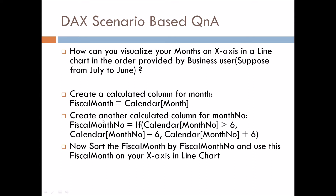Then we create another calculated column for the month number: 'Physical Month Number' equals if 'Calendar Month Number' is greater than 6, then 'Calendar Month Number' minus 6, else 'Calendar Month Number' plus 6. We chose 6 because July's month number is 7 — so 7 minus 6 equals 1, making July's new physical month number 1, and August, September become 2, 3, and so on respectively.